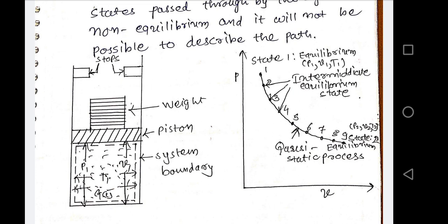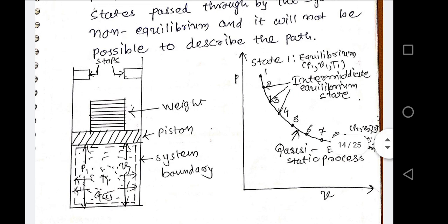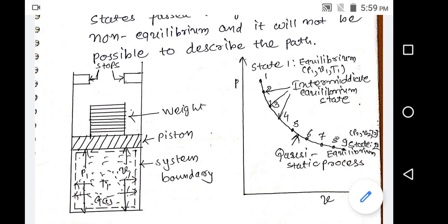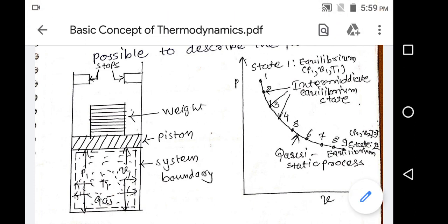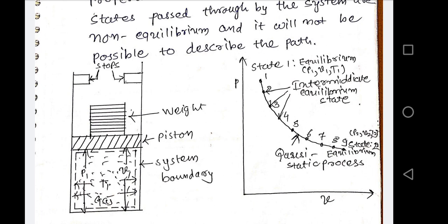Because that process is not taking place in a very slow manner. As per the definition of the quasi-static process, the process proceeds in such a manner that the system remains very close to thermodynamic equilibrium, meaning thermodynamic properties will not change, or may change only in a very small, negligible fraction.